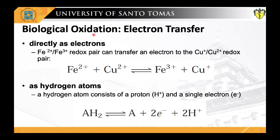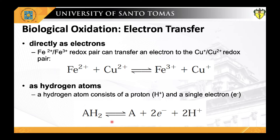Let us now look at the various ways electrons are transferred among atoms or molecules. Electrons are transferred from the electron donor to the electron acceptor in one of four different ways, all of which occur in cells. First, electrons are transferred directly as electrons — for example, the Fe²⁺/Fe³⁺ redox pair transferring an electron to the Cu⁺/Cu²⁺ redox pair. Second, electrons can be transferred as hydrogen atoms — recall that the hydrogen atom consists of a proton and a single electron. As a caution, please do not mistake this reaction for an acid dissociation.